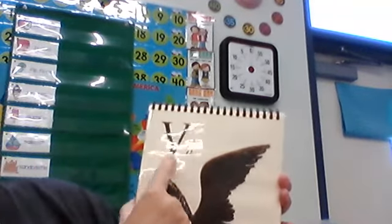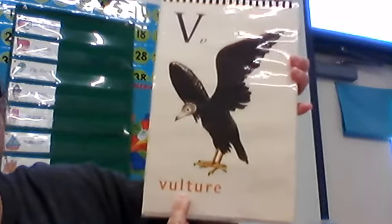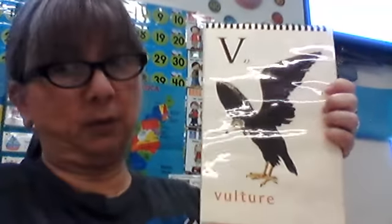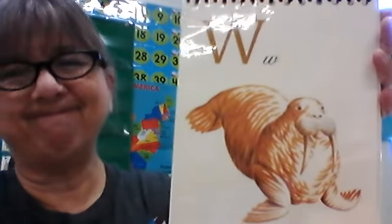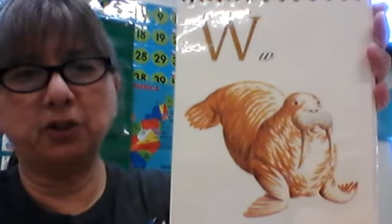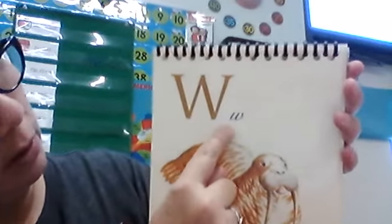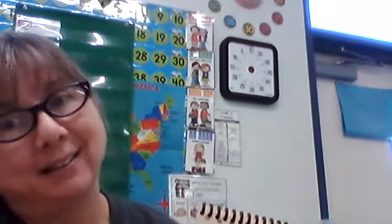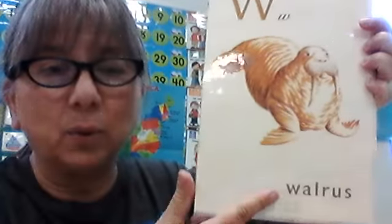Big V, little v. What's our word? Vulture. This one looks like an African-type vulture. We have vultures here — we call them turkey vultures, but they're also very big birds. They fly over our school every day. This we don't have — these are in the ocean, in the polar regions. Big W, little w. Walrus. We don't have that here in Southern California, unless you go to Sea World.